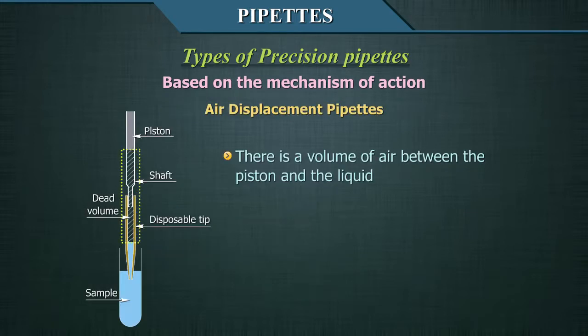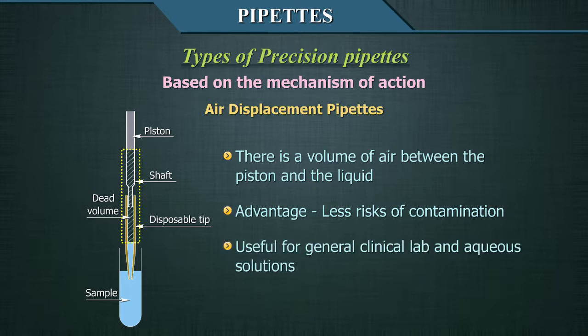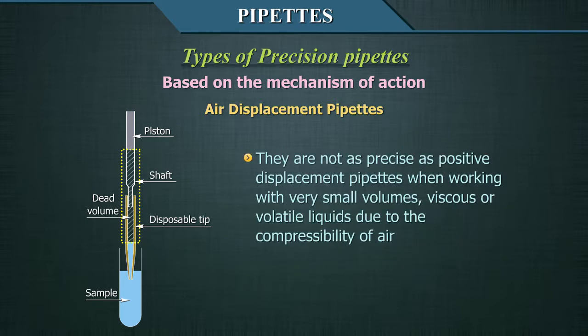In air displacement pipettes, there is a volume of air between the piston and the liquid. Air displacement pipettes have the advantage of presenting less risk of contamination and are useful for general clinical lab use and aqueous solutions. However, they are not as precise as positive displacement pipettes when working with very small volumes, viscous, or volatile liquids due to the compressibility of air.